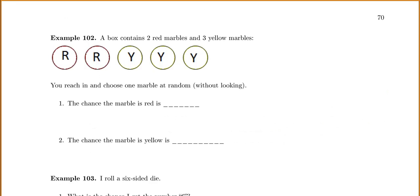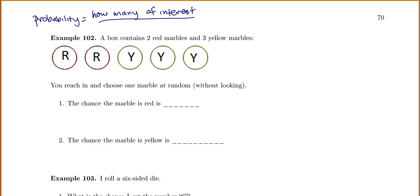Let's practice finding some probabilities. We have a box that contains two red marbles and three yellow marbles. We reach in and choose one marble at random without looking. The probability is calculated as the number of interest divided by the total. There are two reds out of a total of five, so the answer is two fifths. You could also change it to a decimal: two divided by five is 0.4, or times by 100 gives 40%.